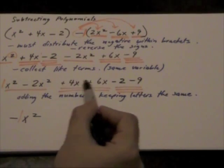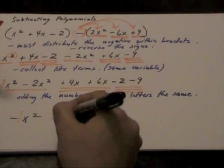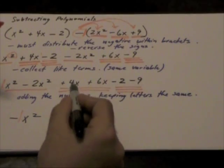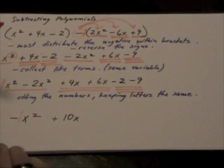We have positive 4 plus 6, which will give me positive 10. But remember the variable stays the same. The variables do not get changed.